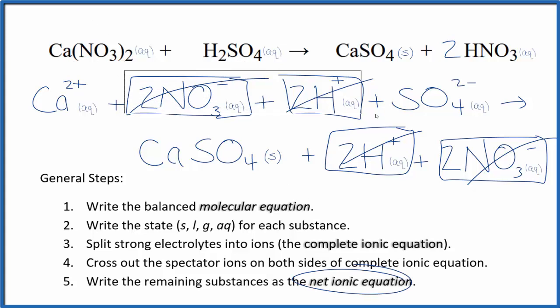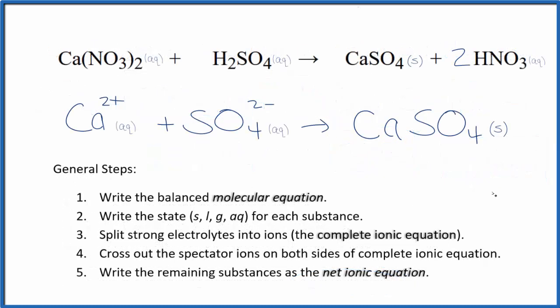Let's remove these spectator ions. So this is the balanced net ionic equation for Ca(NO3)2 plus H2SO4. You'll note atoms are balanced, and the charge is balanced.